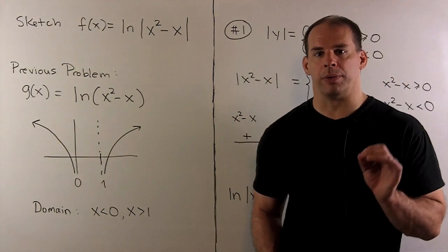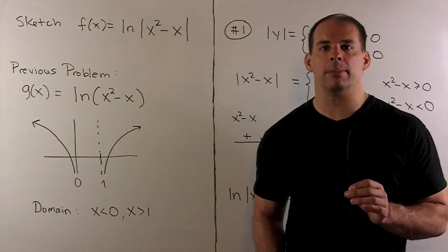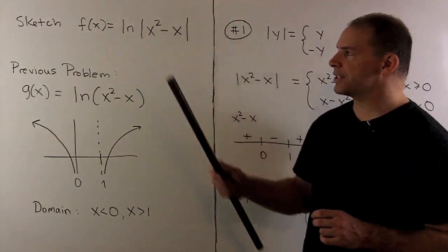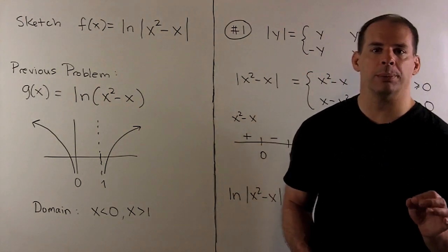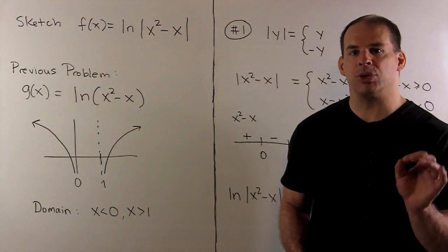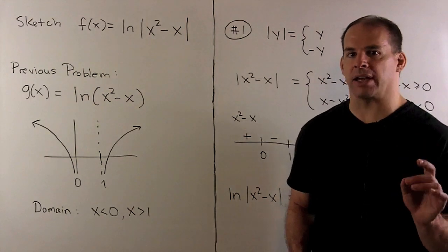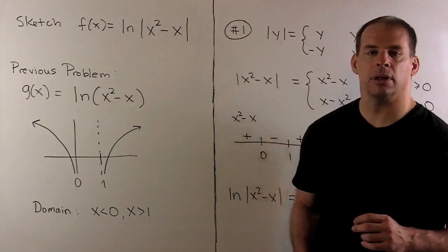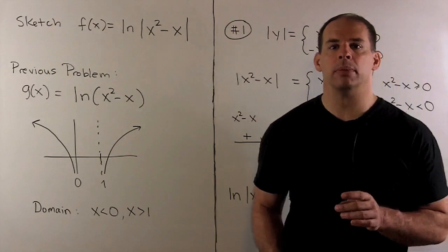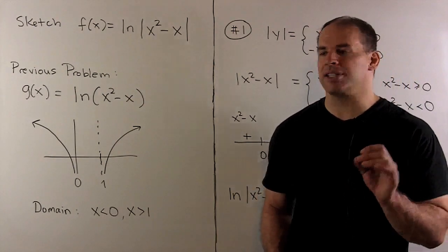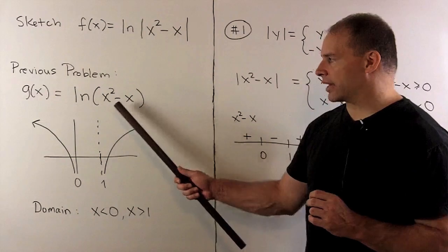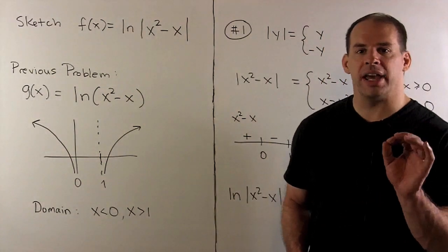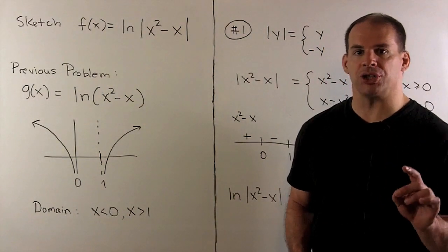As an application of the chain rule with the natural logarithm, we want to sketch the graph of the function f(x) = ln|x² - x|. In a previous problem, we sketched the graph of g(x) = ln(x² - x), so we'll want to take note of how the problem changes.